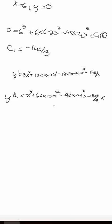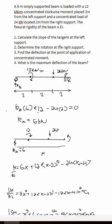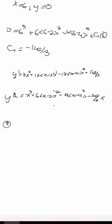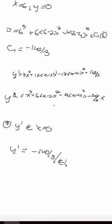For question 1, calculate the slope at the left support. The slope at the left support corresponds to Y' at X equals 0. Substituting X equals 0 into the slope equation, all terms with (X minus 2) and (X minus 4) vanish, so Y' equals negative 140 over 3, divided by EI.